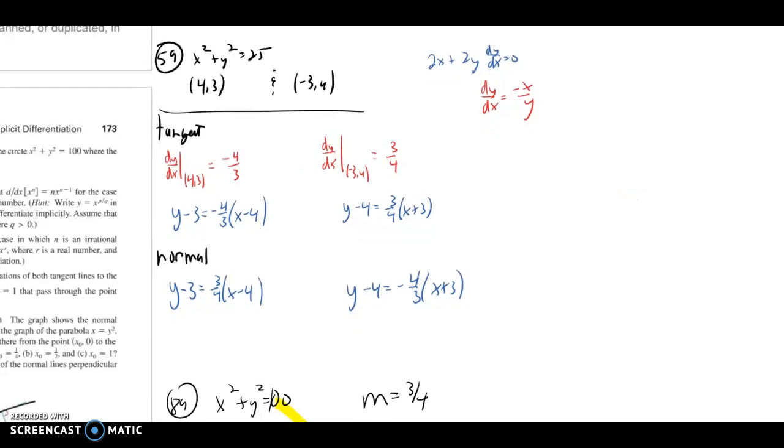Number 59, we're supposed to find the equation of the tangent line through the point 4, 3 and through the point negative 3, 4. So first off, find the derivative. Solve for dy/dx. And to find the derivative at the point 4, 3, we're plugging it into this formula over here. That slope comes out to negative 4 over 3. So the equation in point slope form is this. To get the normal line, everything is the same because it goes through the same point. But instead of the slope of negative 4 thirds, it's the opposite reciprocal. If you look over here to the right, here is our work for the point negative 3, 4.